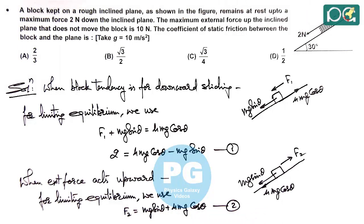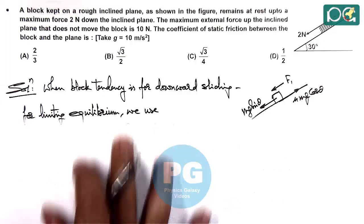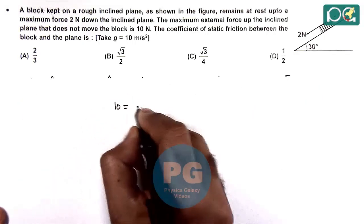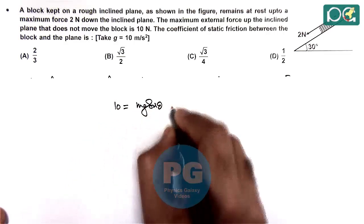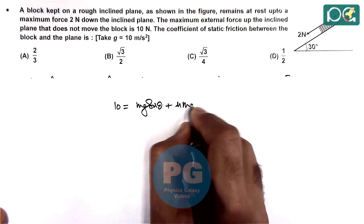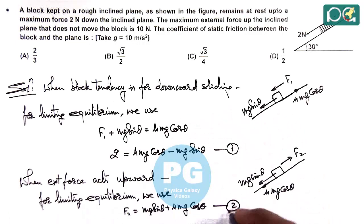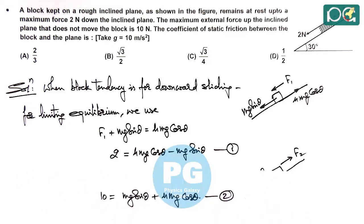Substituting the value of F2 = 10N into equation 2, we get 10 = Mg sin θ + μ Mg cos θ. This is the updated equation 2 after substituting the value.